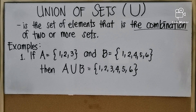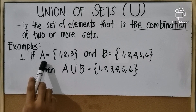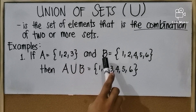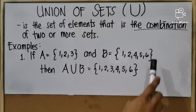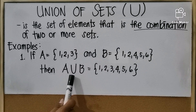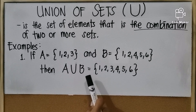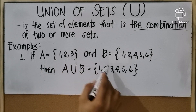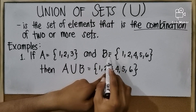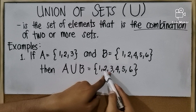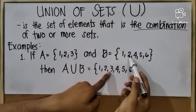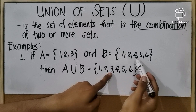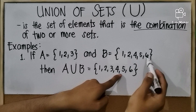For example, if set A equals {1, 2, 3} and set B equals {1, 2, 4, 5, 6}, then the union of set A and B equals {1, 2, 3, 4, 5, 6}. We write all elements from A, then from B we add only those not already written — 1 and 2 are already there, so we add 4, 5, and 6.